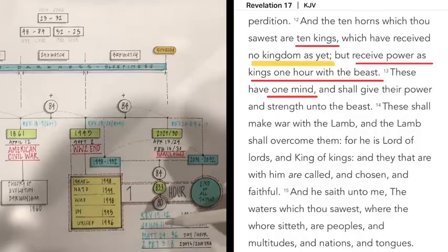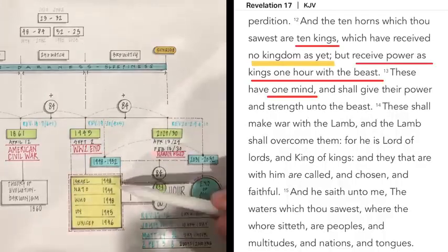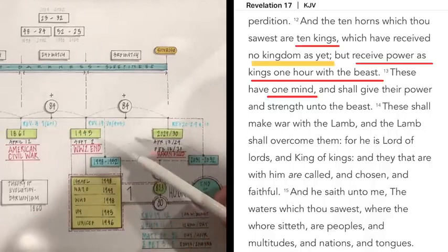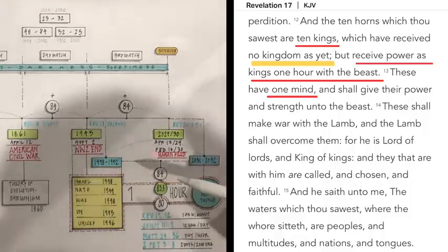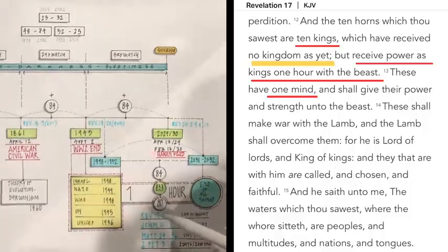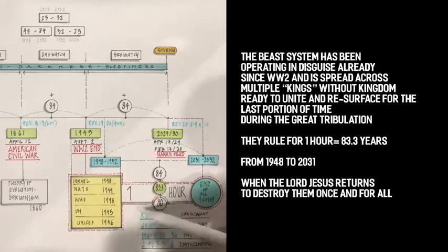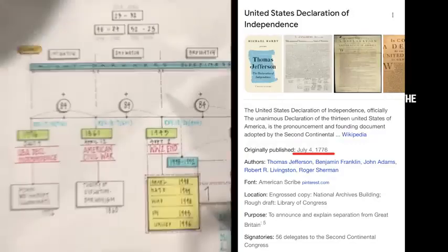Well, if we go to Revelation 17:12, it says, And the ten horns which you saw are ten kings which I received no kingdom of yet. No kingdom of yet. But received power as kings for one hour with the beast. What does it mean? They're receiving power for 83.3 years, not as kings yet, with the beast system, for one hour. What hour? 83.3 years. So, look at this.